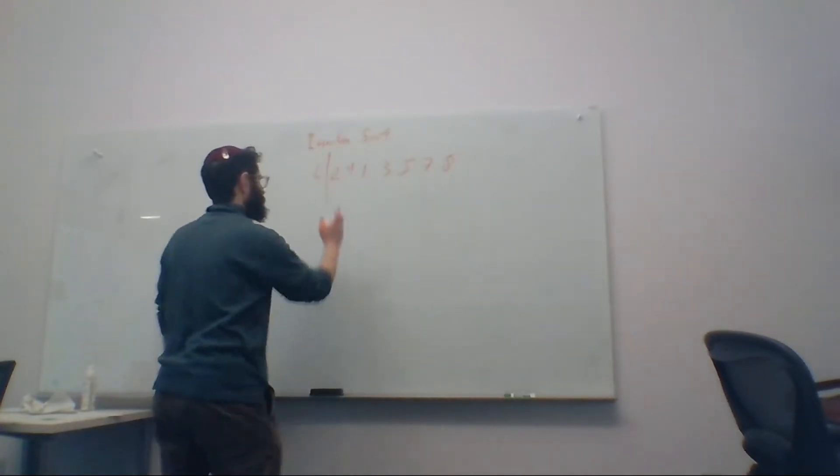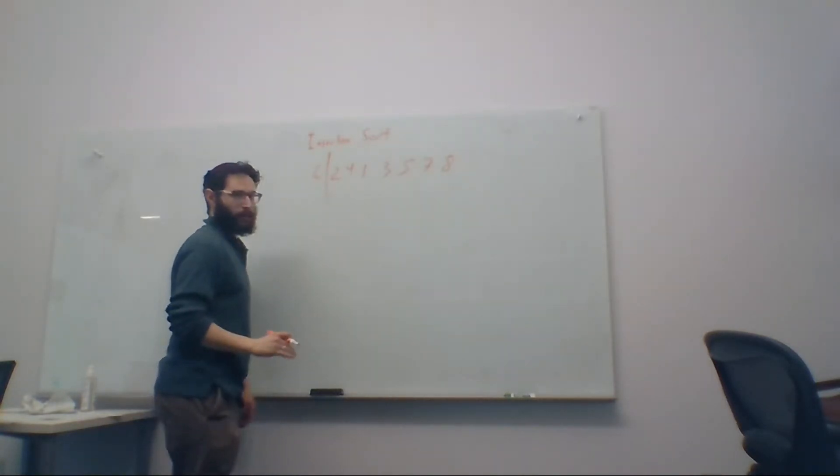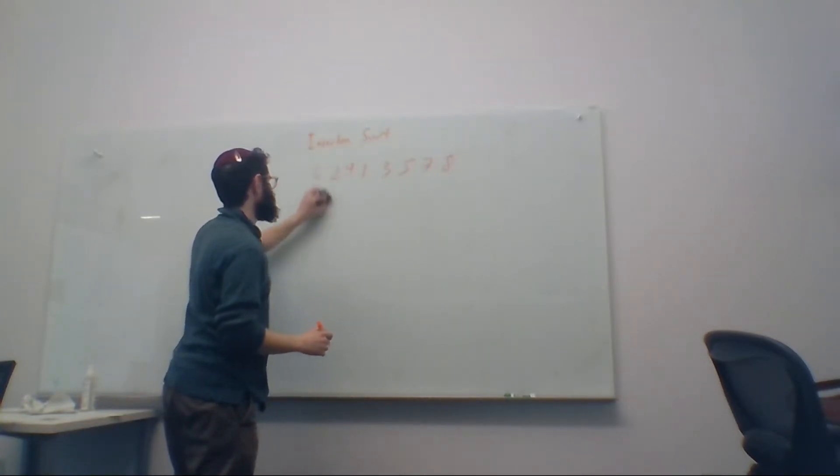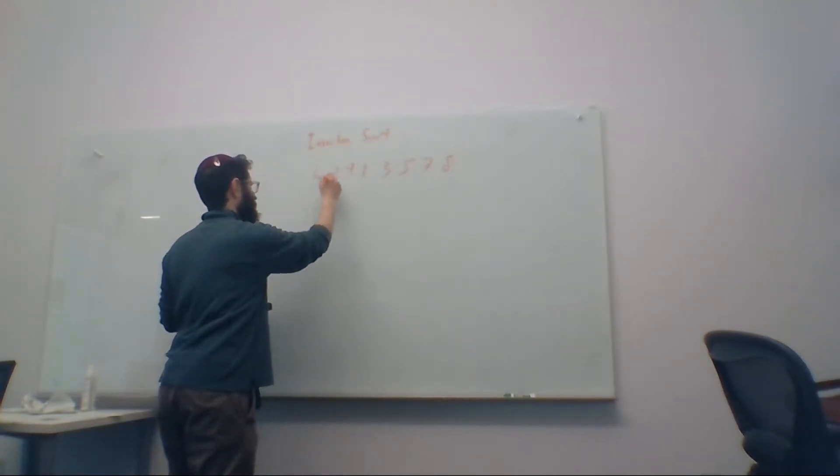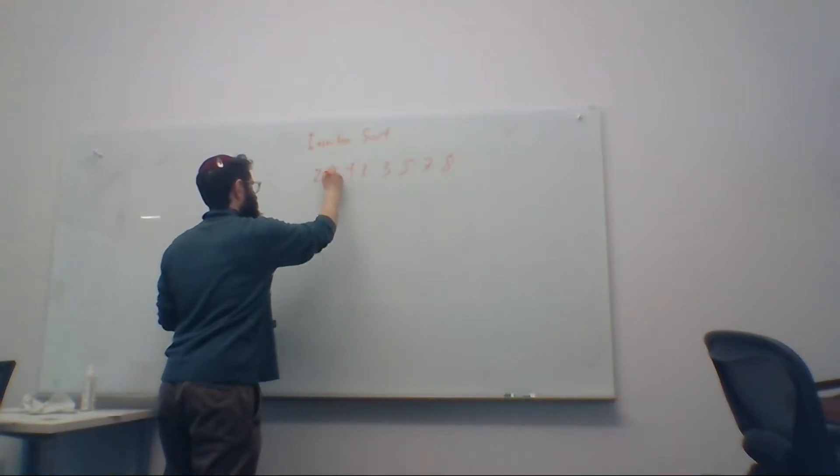So now, what we do is the algorithm continuously looks at the next item in the unsorted portion of the array, and we insert it into the appropriate place in the sorted section. We're going to move two into the sorted section of the array. We're going to compare two and six. Two is smaller than six, so it should go in front. Two is at the front of the array, so we can stop, and this is our sorted section, this is the unsorted section.